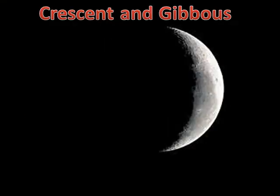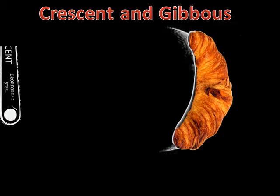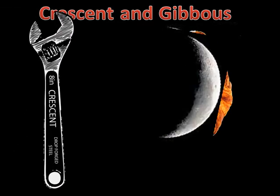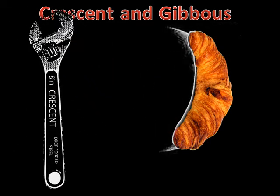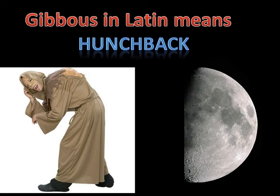The next two words are crescent and gibbous. A crescent-shaped moon is shaped like a croissant or a crescent wrench. Gibbous is a Latin word that means hunchback. How could this moon be called hunchback? Watch.